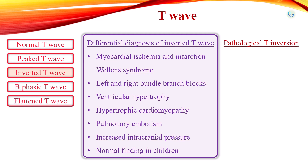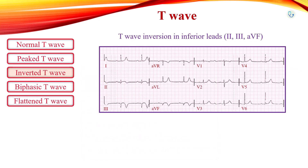New T-wave inversion compared with a prior EKG is always abnormal. Pathological T-wave inversion is usually symmetrical and at least 3 mm deep. T-wave inversions due to myocardial ischemia or infarction occur in contiguous leads based on anatomical location: leads 2, 3, and AVF represent inferior; leads V2 to V4 represent anterior; and leads 1, AVL, V5, and V6 represent lateral.